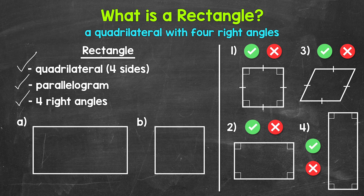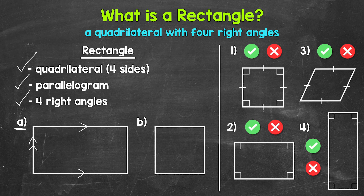So four 90-degree angles. Not only do rectangles have the features of quadrilaterals and parallelograms, but all four angles are right angles. Looking at example A right here, we can see that we have a quadrilateral, and this is also a parallelogram. Opposite sides are parallel and we can mark that using arrow symbols — one arrow symbol on each side of one pair, and two arrows for the other pair of parallel sides.